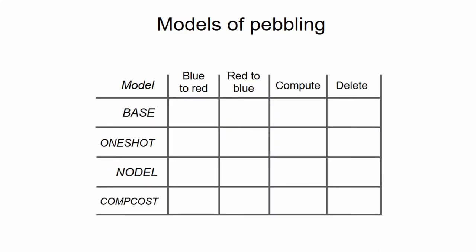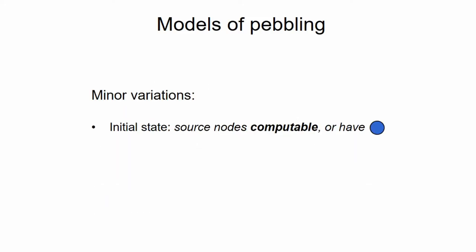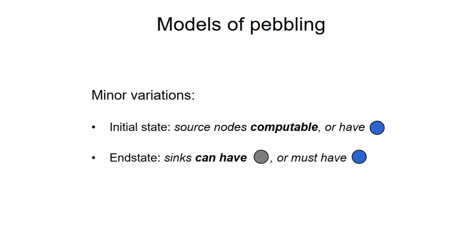So, we can summarize these different model variants by showing the cost of operations in a table. In particular, the transfer operations have a cost of 1 in each of these model variants. In the base model, the other two operations have a cost of 0. In one-shot, computation is free for the first time and then cannot be executed afterwards. In nodal, it's the deletion operation that cannot be executed. And in comCost, the computation step has a small constant cost of epsilon. We can also have other minor variations in the problem definition, for example, requiring source nodes to be loaded from slow memory, or outputs to be written to slow memory, but one can show that these minor changes do not matter for our results.